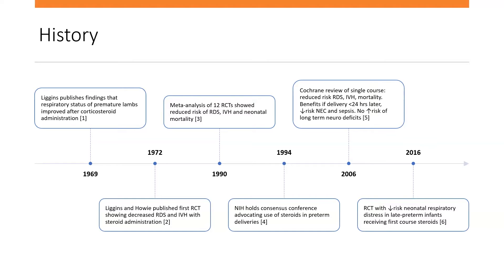The next major change came in 2016 — the antenatal late preterm steroid ALPS trial, which demonstrated a benefit and decreased risk of respiratory distress syndrome in infants receiving the first course of antenatal corticosteroids between 34 and 37 weeks. Since that time, because the number of people receiving antenatal corticosteroids has increased so significantly, it's led into this new era of researching what the risks are and reevaluating the risk-benefit of steroid administration — which is where we are right now.